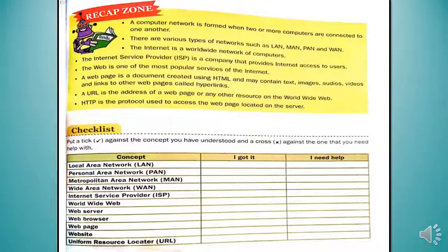Next is the recap zone — by reading it, you can recap all the concepts discussed in this chapter. After that, a checklist is given. Put a tick against the concept you have understood and a cross against the one you need help with. Review the concepts from this lesson and mark accordingly.